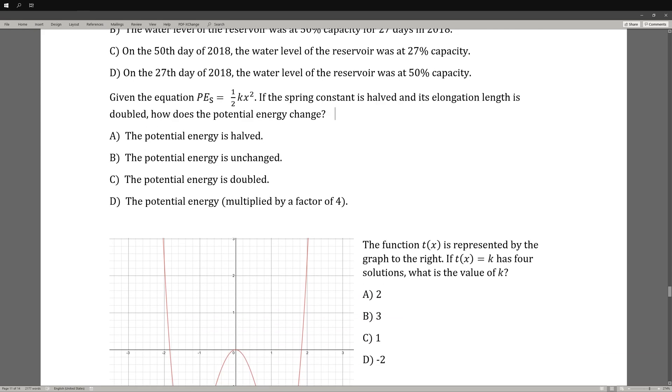Given the equation PE(s) = (1/2)kx^2, if the spring constant is halved and the elongation length is doubled, how does the potential energy change? x is going to represent the length and k is going to represent the spring constant. If the spring constant is halved, this would be a direct relationship between the potential energy and k. You could leave this one-half out because that is not going to affect it. That's not the value that we're changing. We are only changing k. So if k is one-half, PE of s will also be one-half.